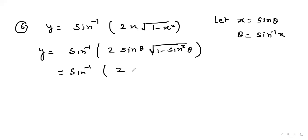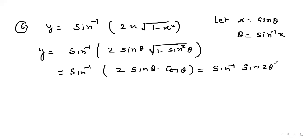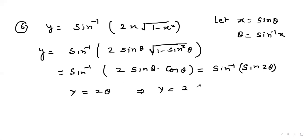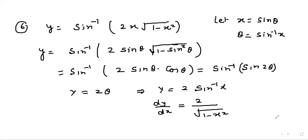So y = sin⁻¹(2 sin θ cos θ) = sin⁻¹(sin 2θ) = 2θ = 2 sin⁻¹ x. Therefore dy/dx = 2/√(1 − x²).